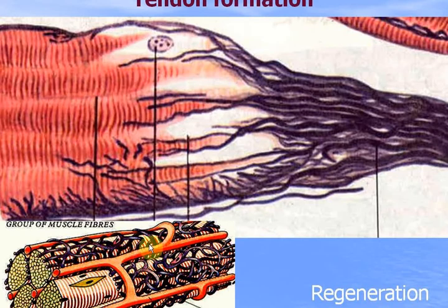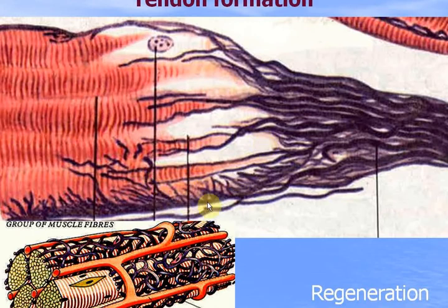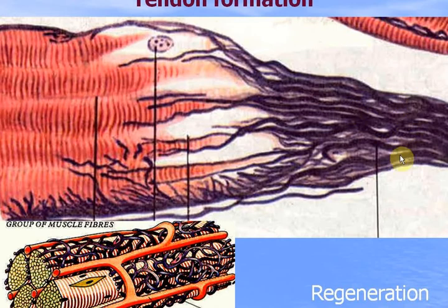At the ends of muscle fibers and the muscle itself, collagen fibrils fuse together and go in parallel, building bundles of collagen fibers — these fibrils come together and this is the tendon.